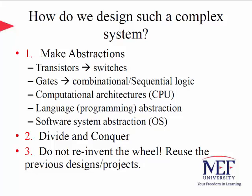So how do we really design such a complex system? There are three important milestones. First, make abstractions — transistors act like switches; above that are gates, combinational logic, computational architectures like the CPU, programming language abstractions, and software system abstractions on top of that. Making these abstractions just makes things much easier. The second milestone is the divide-and-conquer method. The third milestone: do not reinvent the wheel — reuse previous designs and projects.